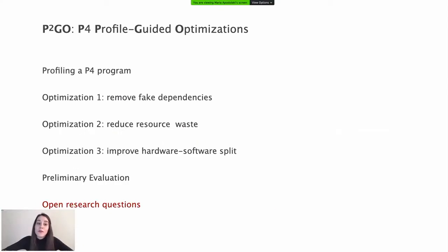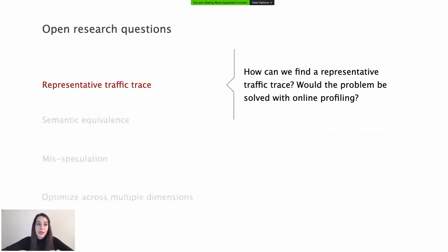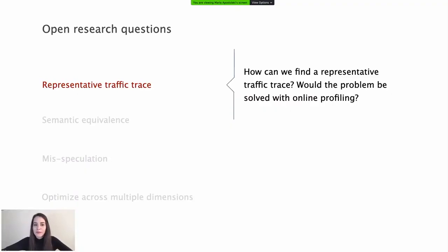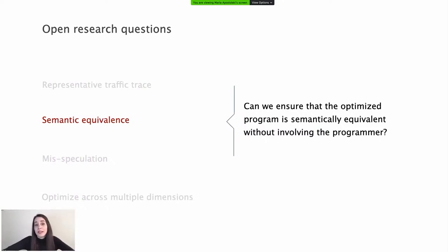We believe that P2Go is the first step towards a new direction for compiling P4 programs. P2Go also raises many interesting questions. First, how practical is it to get a representative traffic trace for profiling? The leverage of P2Go is that the trace needs to be representative only with respect to the observation used to optimize the program. An alternative approach would be to do online profiling and dynamic compilation — but the question remains whether online profiling is worth the cost of monitoring, recompiling, and loading new programs dynamically.